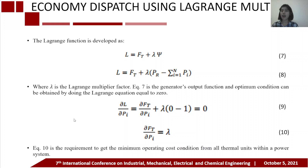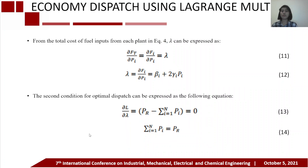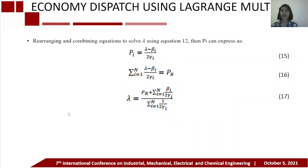Equation 7 is the generator's output function, and the optimum condition is obtained by setting the Lagrange equation equal to zero, giving equations 9 and 10. Equation 10 is the requirement to achieve minimum operating cost for all thermal units within a power system. From the total cost of fuel input in equation 4, lambda can be expressed as equations 11 and 12. The second condition for optimal dispatch is expressed as equations 13 and 14. By rearranging and combining equations to solve for lambda using equation 12, Pa can be expressed as equations 15, 16, and 17.